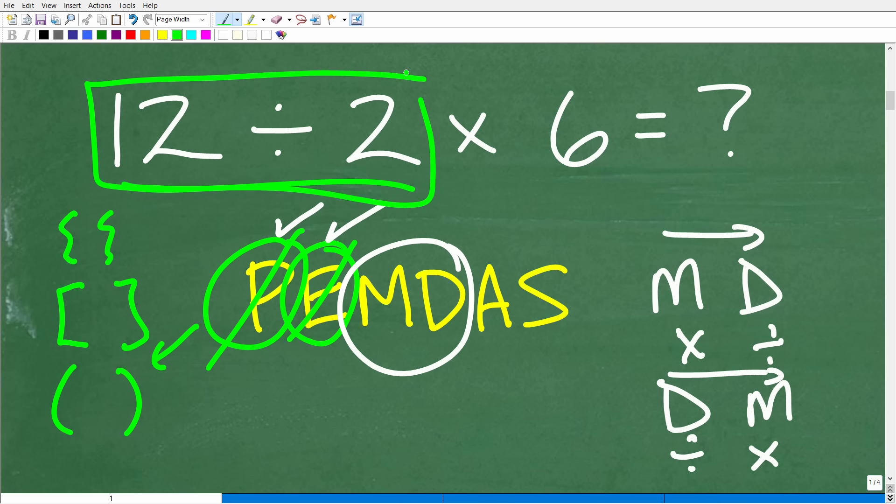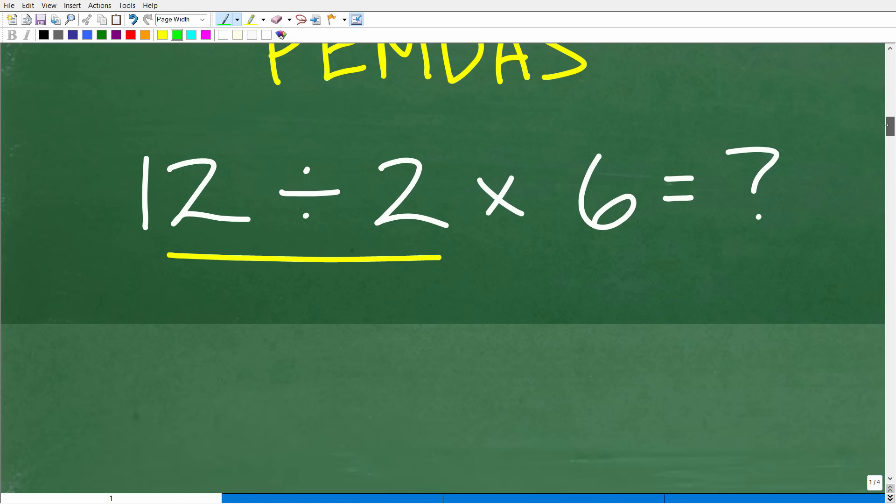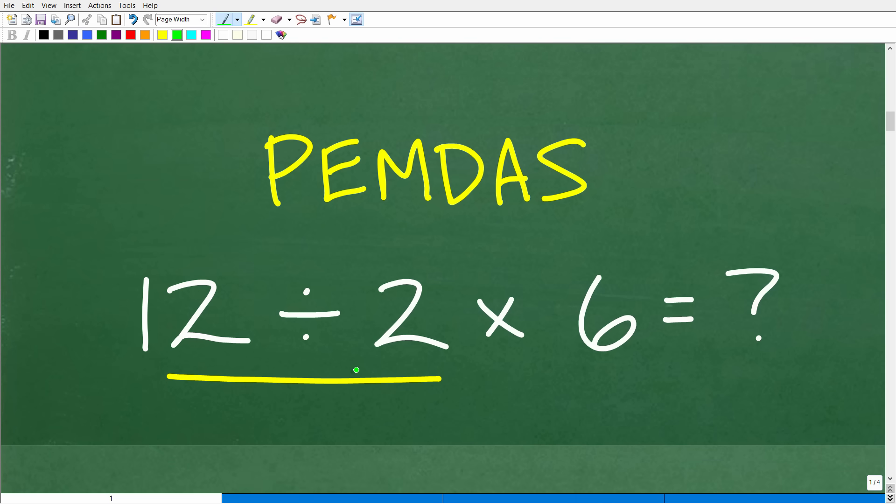12 divided by 2, of course, will be what? The answer is going to be 6. So 12 divided by 2 is going to be 6. And then, of course, we'll walk through the rest of the steps.